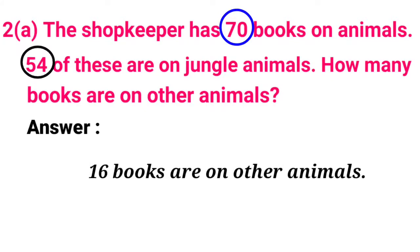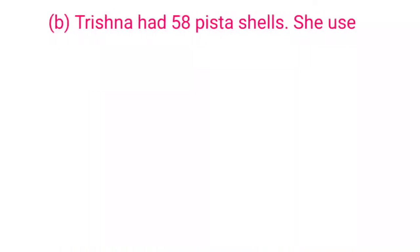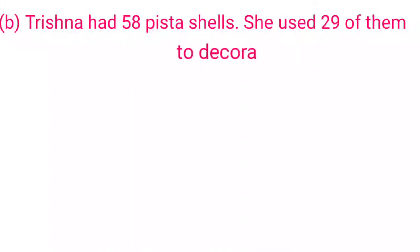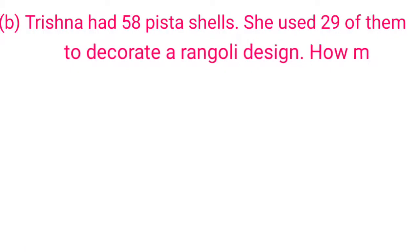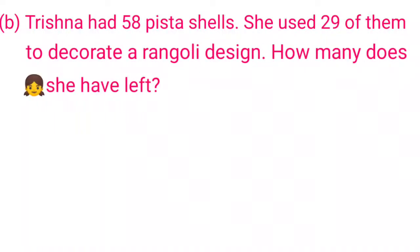Now we will see part B. Trishna had 58 bista shells. She used 29 of them to decorate a rangoli design. How many does she have left? Trishna had 58 bista shells, she used 29 for the rangoli design, and we need to find how many are remaining.